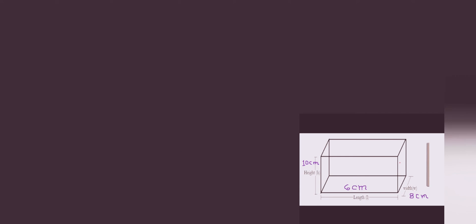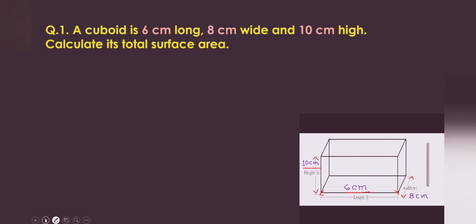Here you can see this is a cuboid. The length given is 6 cm, the breadth is 8 cm, and the height is 10 cm. Question number 1: a cuboid is 6 cm long, 8 cm wide, and 10 cm in height. Calculate its total surface area.